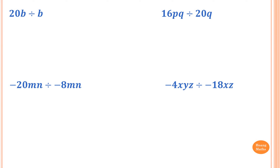Please stop the video and try this one yourself. So first of all, write 20p divided by b in fractions: 20p over b. The p cancels out, so the answer is 20 over 1, which is 20.